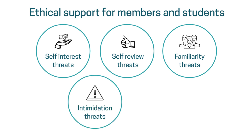Next, we have intimidation threats. This can refer to both actual or perceived threats which might prevent an accountant from acting objectively. For example, you're concerned that if you don't follow your boss's orders and overstate the profits in the annual reports, you'll be threatened with dismissal or replacement. Therefore, you feel like you must follow this particular unethical procedure to preserve your position.